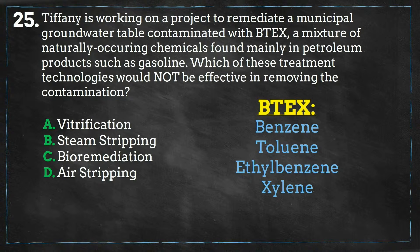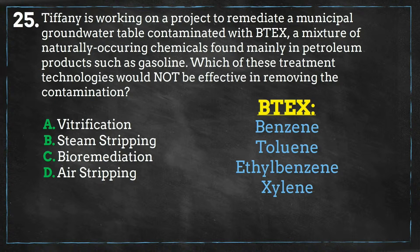BTEX refers to the chemicals benzene, toluene, ethylbenzene, and xylene. These compounds are volatile organic compounds, also known as VOCs, that are found in petroleum and petroleum products such as gasoline, and can be found in seawater in the vicinity of natural gas and petroleum deposits.